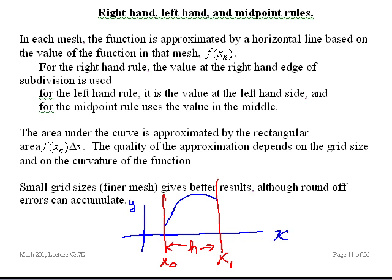For the left-hand rule, you pick the value of the function at the left fence post of the mesh. And from that, you create a rectangle. You take its area, and you say that is the area of the function in this mesh.